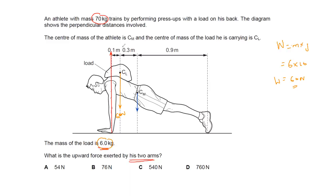The mass of the athlete is 70 kilograms, so the weight equals 70 multiplied by 10, which equals 700 newtons. The weight of the athlete is 700 newtons, the weight of the load is 60 newtons, and there is an upward force by the arms that we need to find. The pivot is the point around which the object can rotate — since the athlete is doing press-ups, he rotates around his feet.